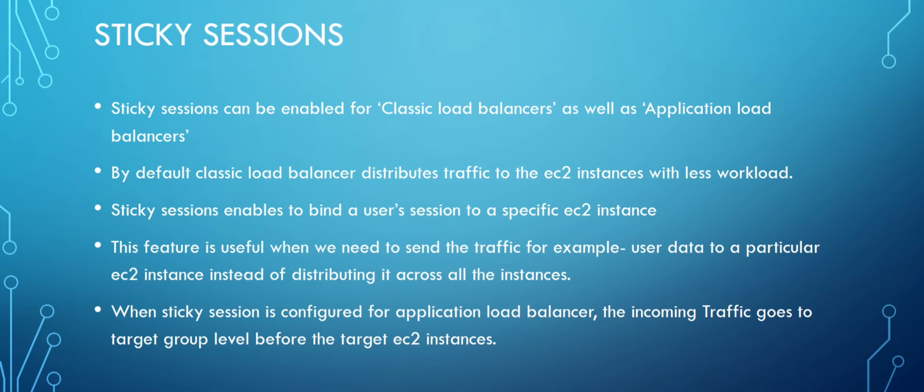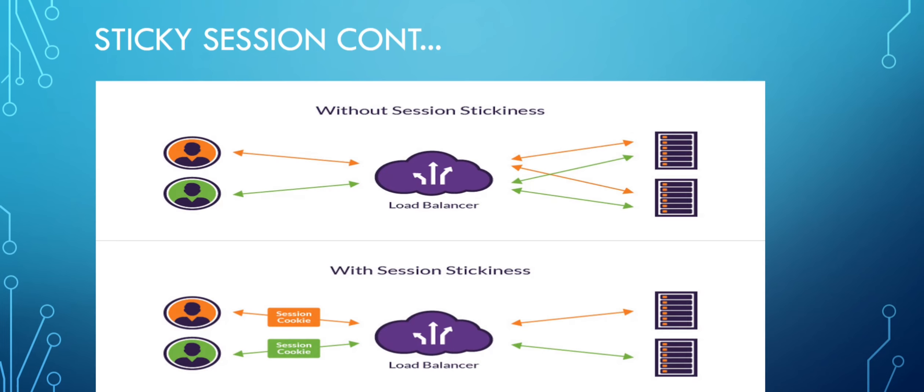When sticky sessions are configured for an application load balancer, the incoming traffic goes to the target group before it goes to the target EC2 instance. In the application load balancer there are target groups instead of direct targets, and the target group is basically a collection of instances. The traffic goes to the target group first before it is distributed to the underlying EC2 instances.